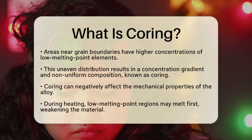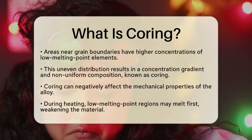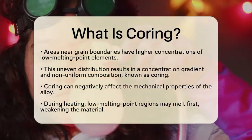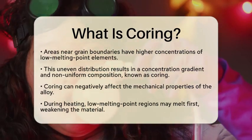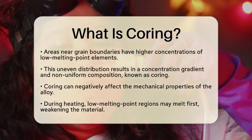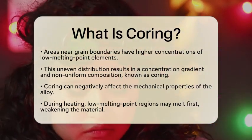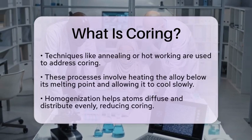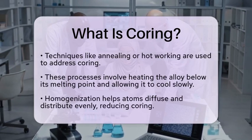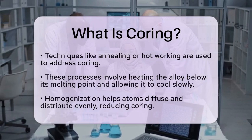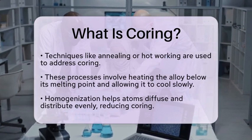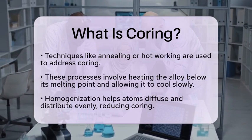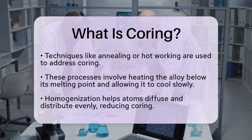To tackle coring, material scientists often employ techniques like annealing or hot working. These processes involve heating the alloy to a specific temperature that is below its melting point. The alloy is then allowed to cool slowly, which helps the atoms diffuse and distribute more evenly throughout the material. This process, known as homogenization, can eliminate coring and improve the overall properties of the alloy.